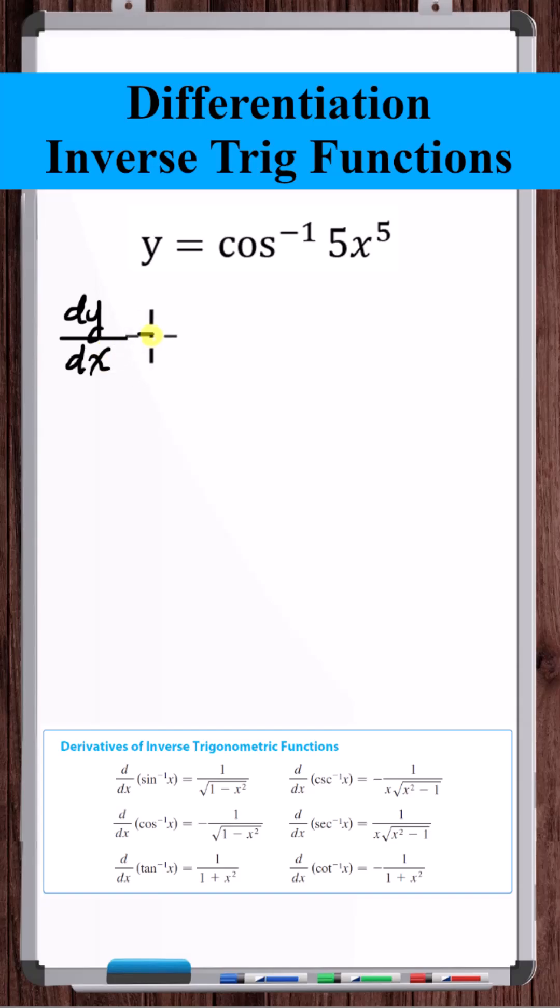So using the chain rule, we have the inverse cosine of something. So the derivative of the inverse cosine of something is this. Just put that something in for x.